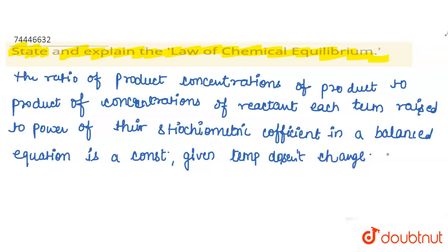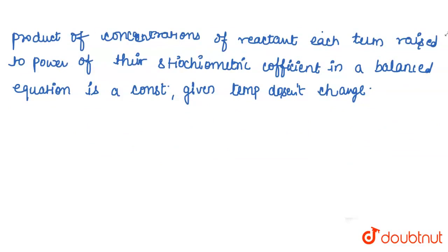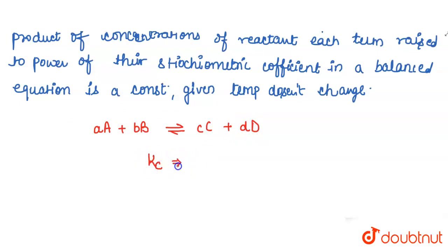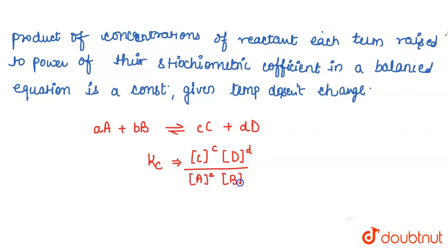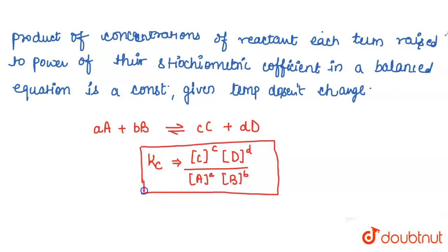So, what does it say? It says that if you have an example like: aA + bB gives cC + dD, then the equilibrium constant Kc is equal to concentration of C to the power c, multiplied by concentration of D to the power d, divided by concentration of A to the power a and concentration of B to the power b. This is the law of chemical equilibrium.